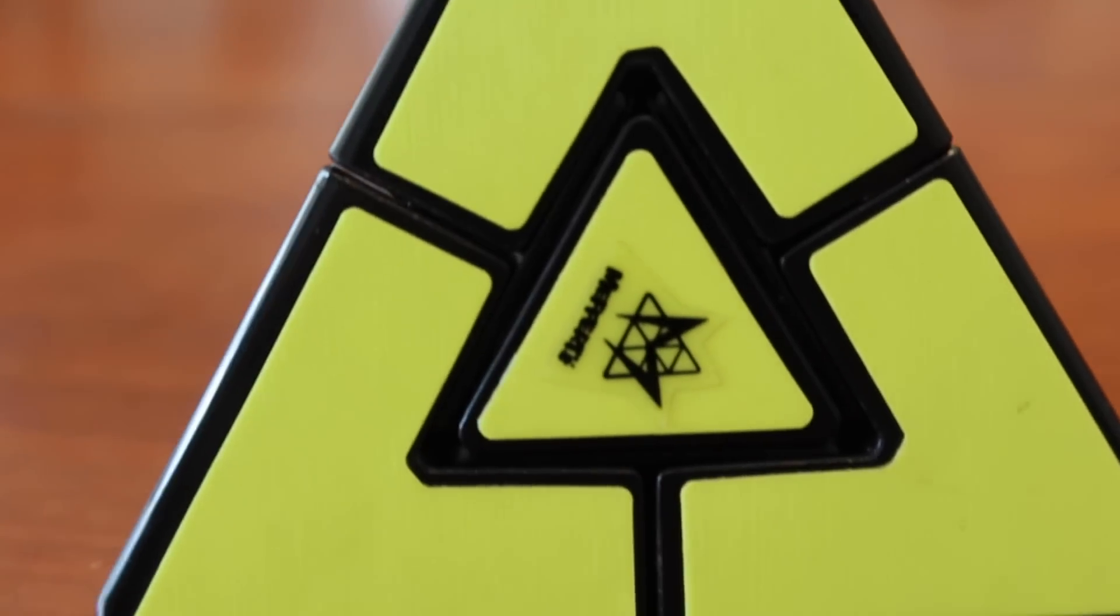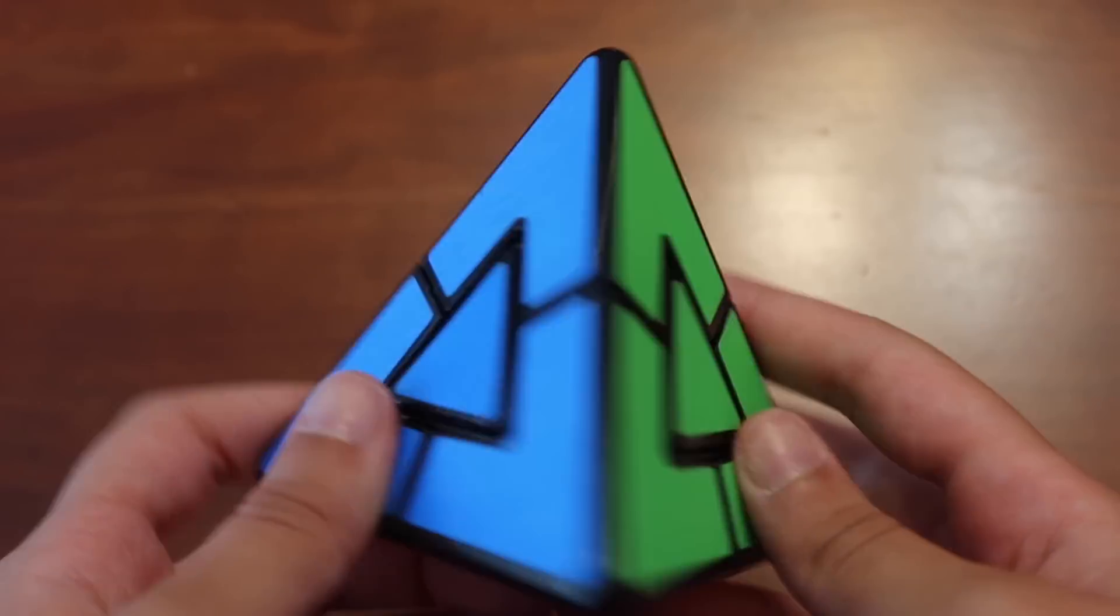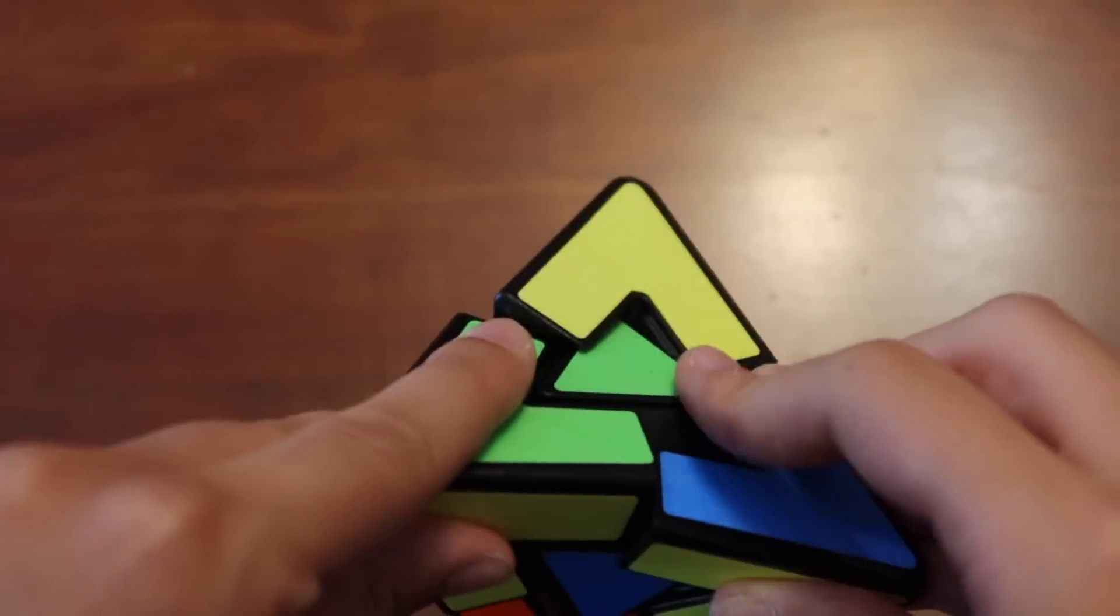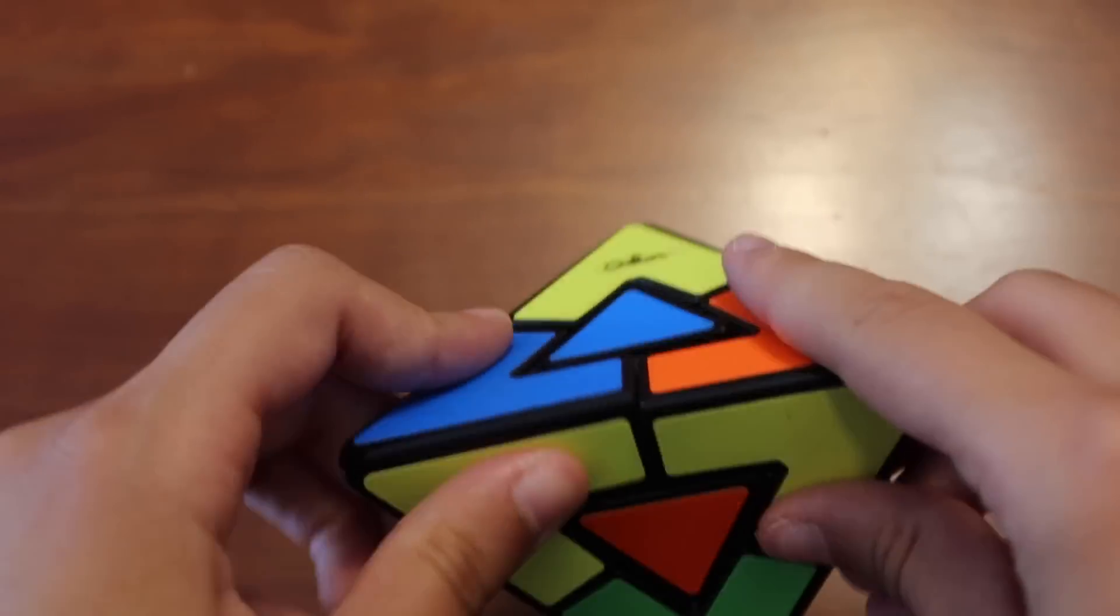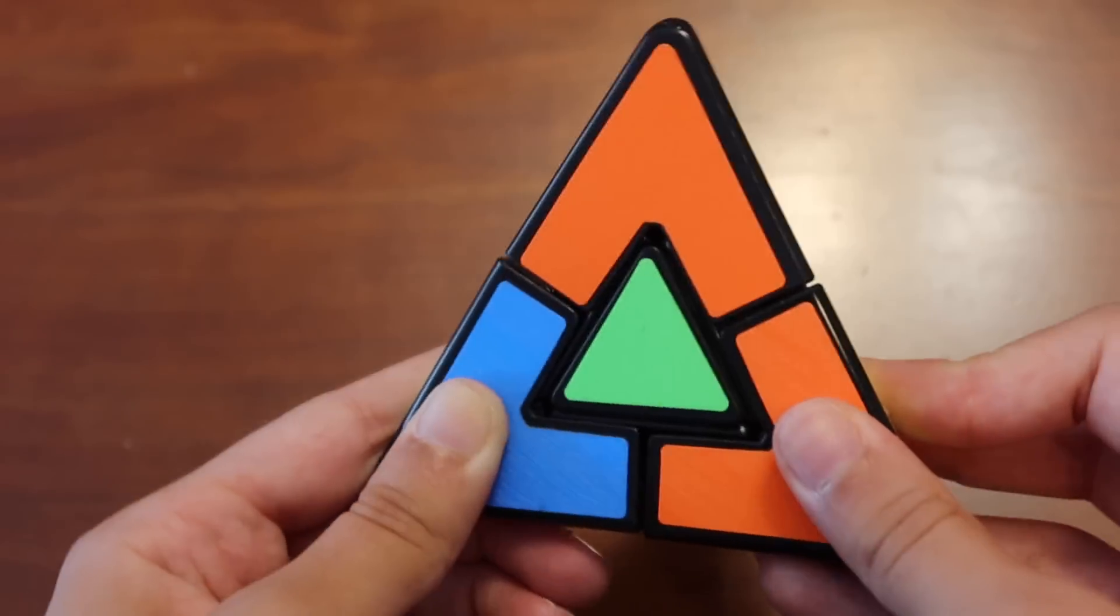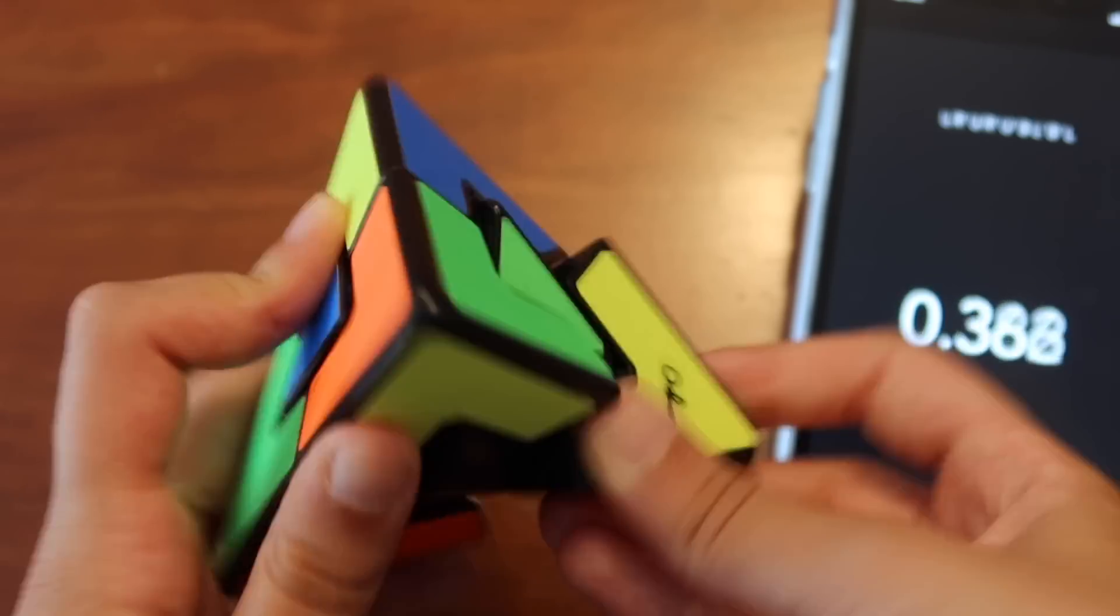In number four, we have the Pyraminx Duo. Every single combination of scrambles for this cube can be solved in four moves or less. So it's very easy, super intuitive to solve, doesn't really require learning any algorithms besides like a sledgehammer. And it's a lot of fun when I'm looking for something quick and easy to solve.